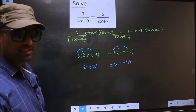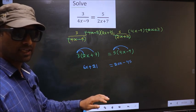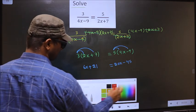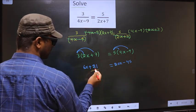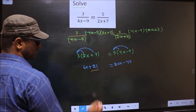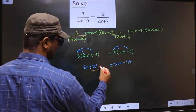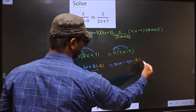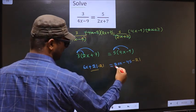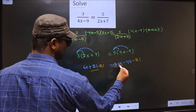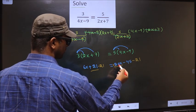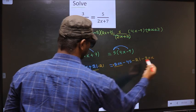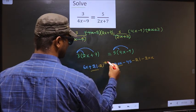Now all the x terms on one side and the numbers on the other side. What I mean is plus 21 should not be present on this side. So to remove plus 21, you subtract 21 on both sides. In the same way, plus 20x should not be present on this side. So to remove plus 20x, you subtract 20x on both sides.